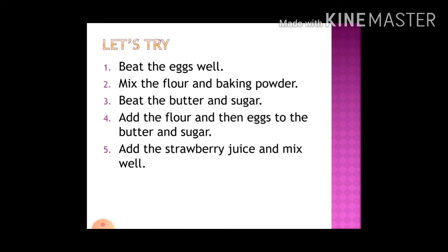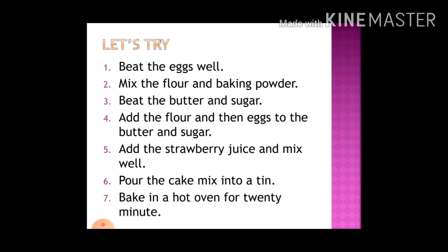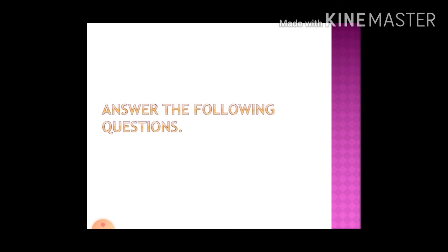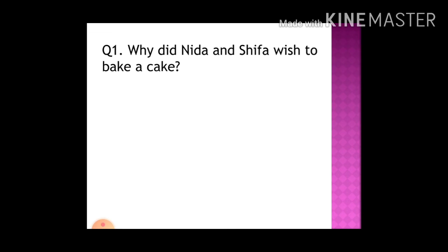The fourth step is to add the flour and eggs to the butter and sugar. The fifth step is to add the strawberry juice and mix well. The sixth step is to pour the cake mix into a tin. The last step is to bake it in a hot oven for 20 minutes. This is the correct sequence of baking a cake.